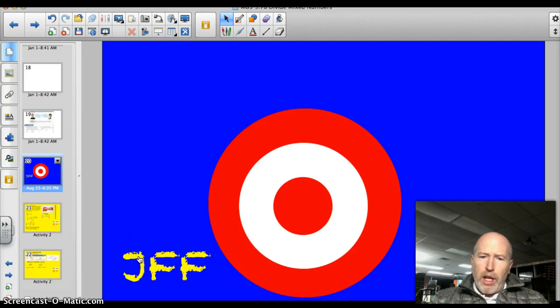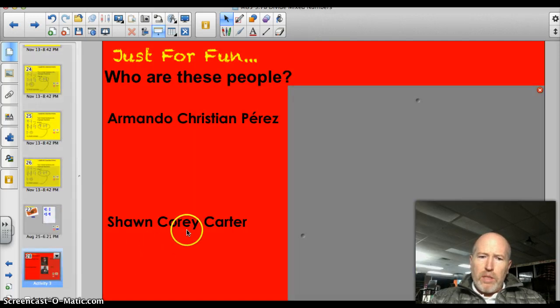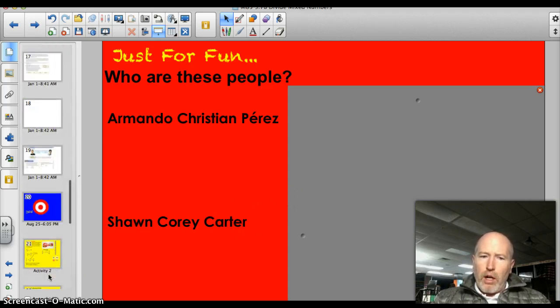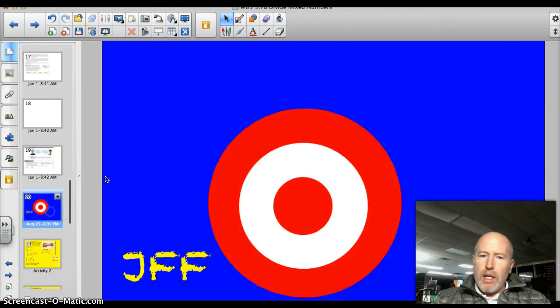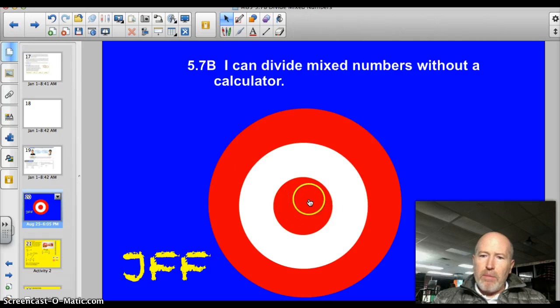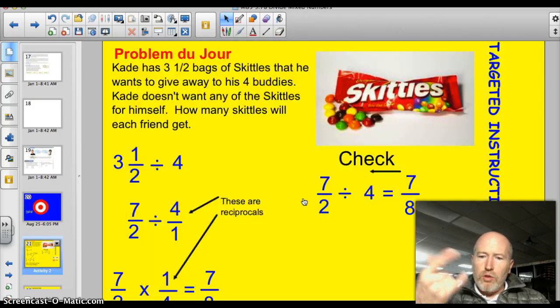First, let's start off with our trivia question of the day. Who are these people? Armando Christian Perez and Sean Corey Carter. I know you know who they are, you just don't know them by these names. Tonight officially our target is 5.7B. I can divide mixed numbers without a calculator. Let's do this thing.